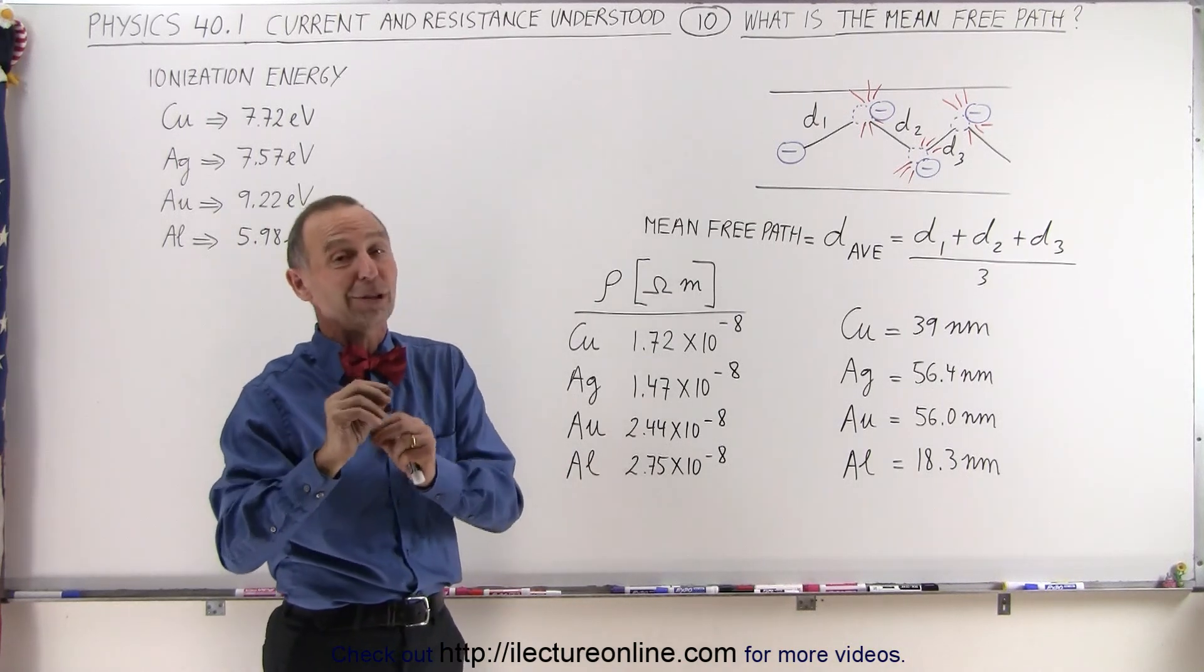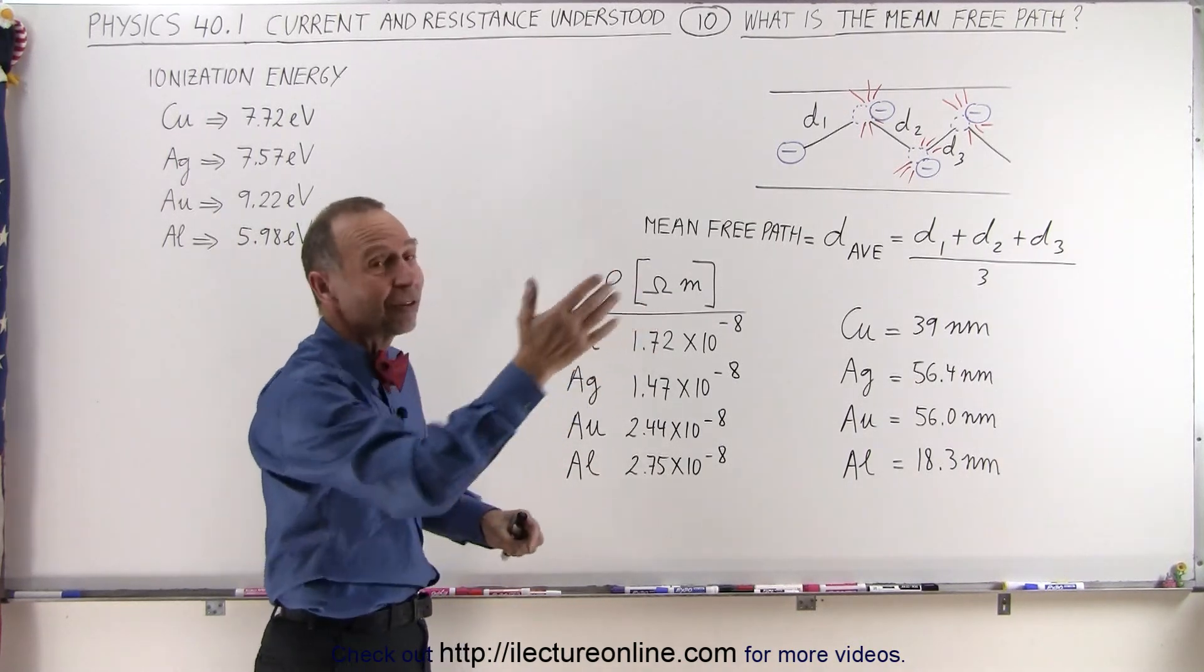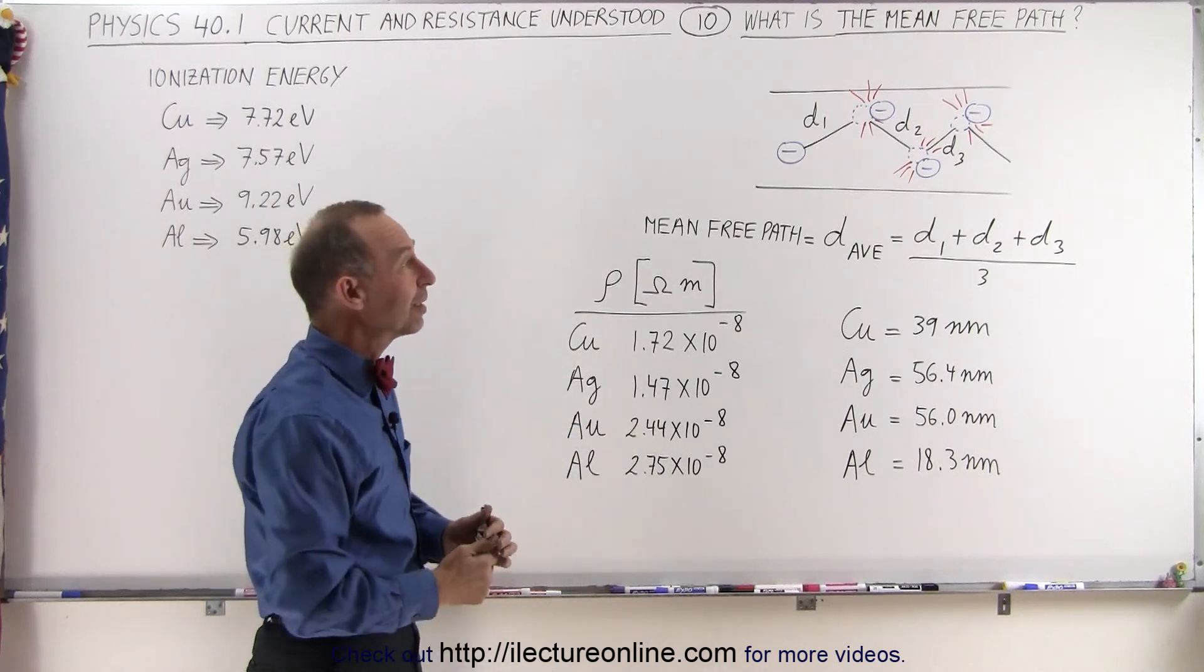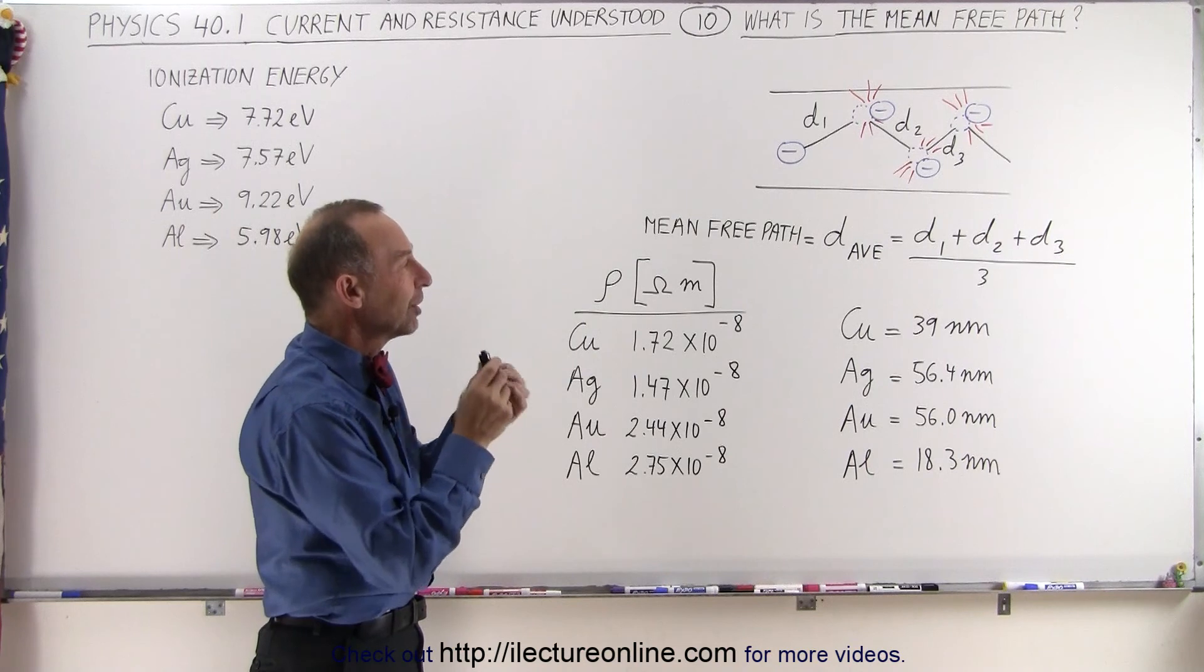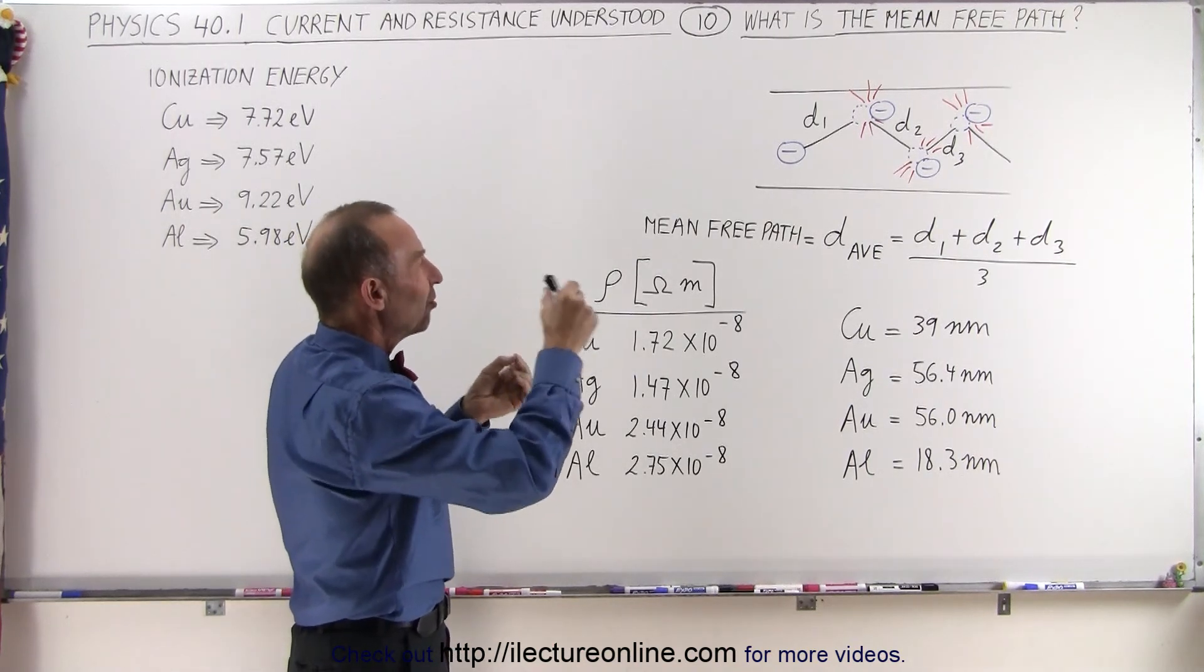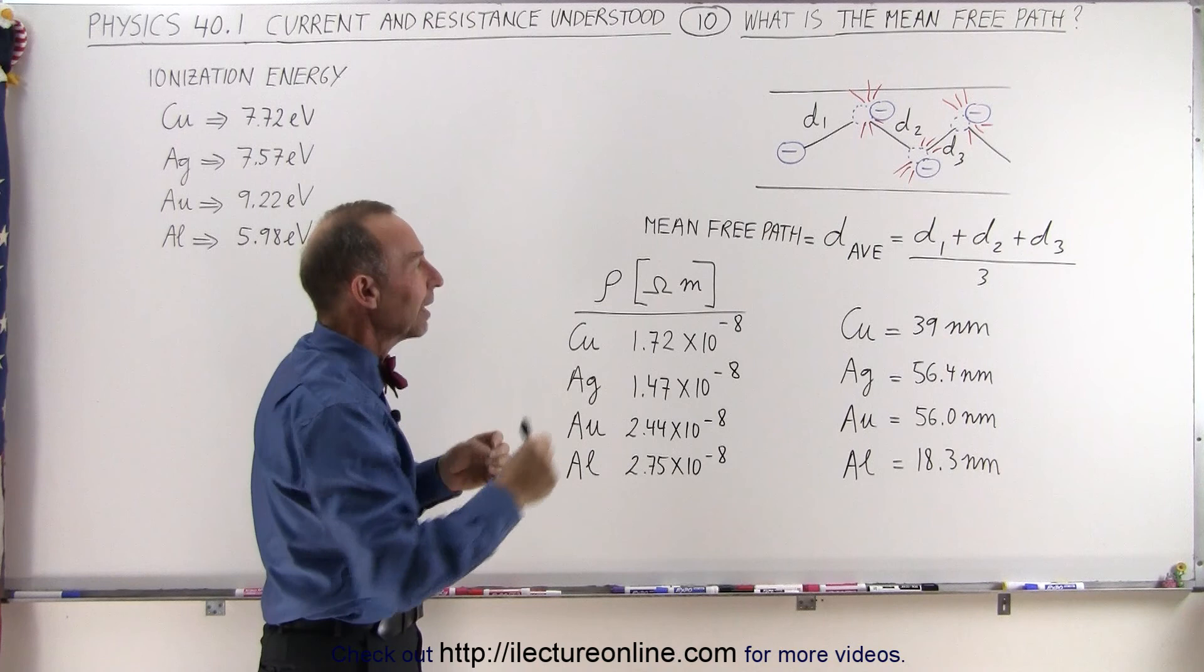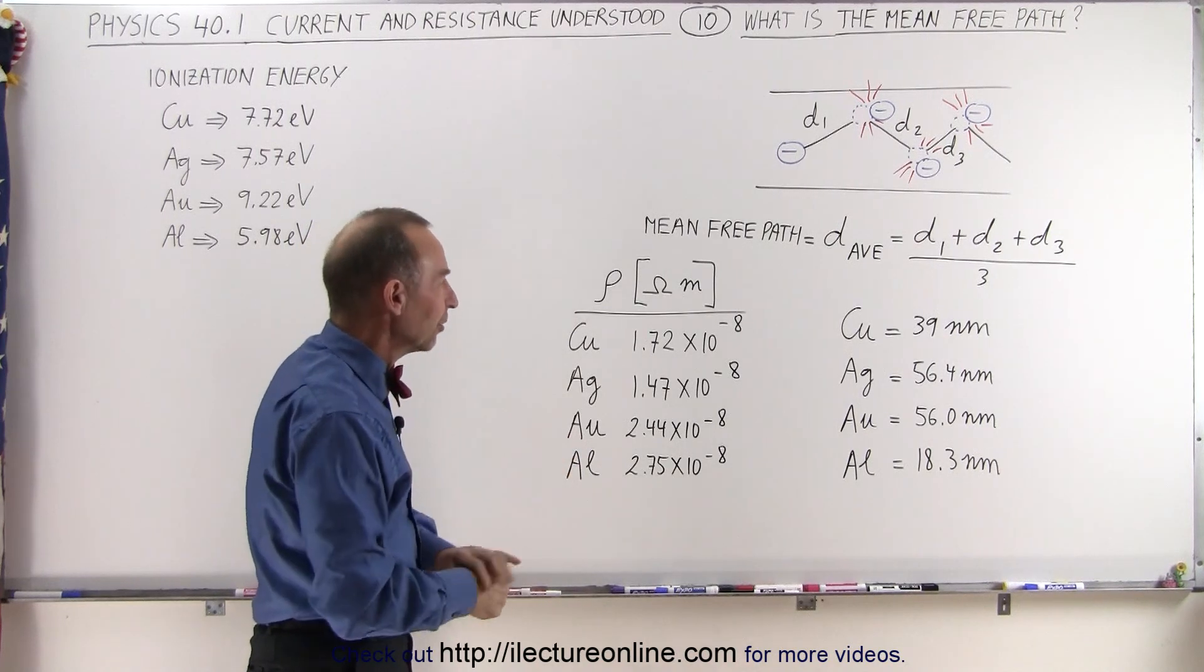Of course, there'll be a whole lot more than just three of those paths. There'll be billions of those paths divided by billions, but the concept is there. It's simply the average distance taken by the electron before it collides with another electron of another atom.